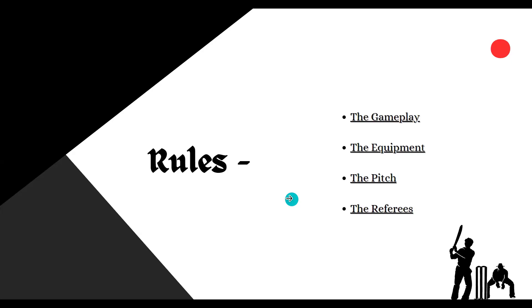There are three main formats of cricket: Test cricket, One Day cricket, and T20 cricket. T20 cricket is the most popular form of cricket in the world today as it is fast-paced and exciting. Bowlers can bowl in different styles such as fast bowling, spin bowling and medium pace bowling. Fielders can position themselves anywhere on the field except behind the wicket at the bowler's end.